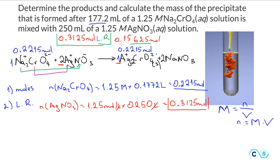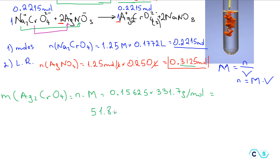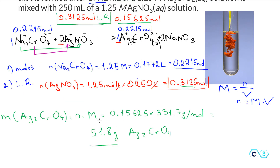Since we've already determined the limiting reactant, we know 0.15625 moles of precipitate will form. The mass of silver chromate equals moles multiplied by molar mass: 0.15625 × 331.7 g/mol. Applying significant figures — three significant figures based on the given quantities — we get 51.8 grams of precipitate.